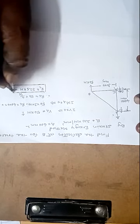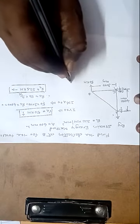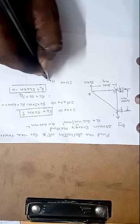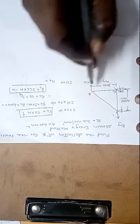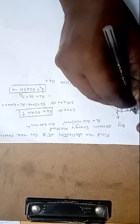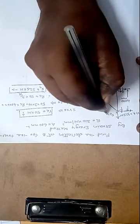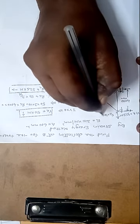From summation of horizontal forces equals zero, at the hinged point the horizontal reaction component HA must be in the opposite direction to RC. Therefore HA equals 37.5 kilonewton towards the left side. So the reactions are: VA equals 50 kilonewton, HA equals 37.5 kilonewton towards left.